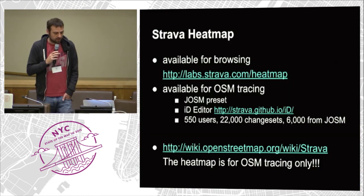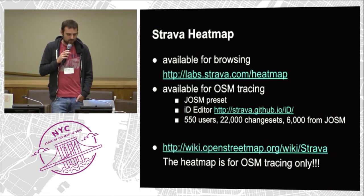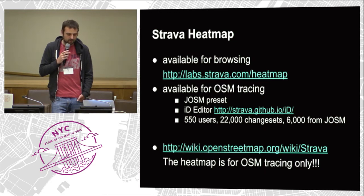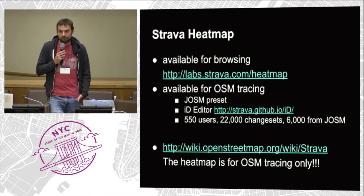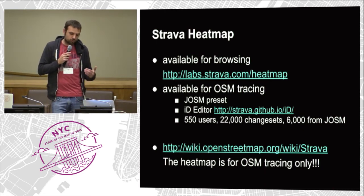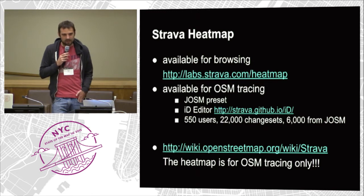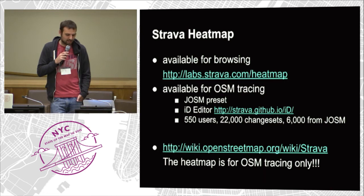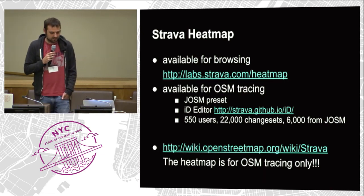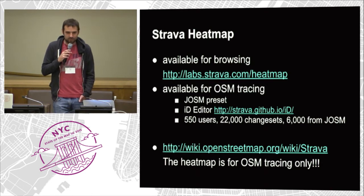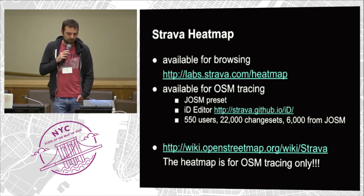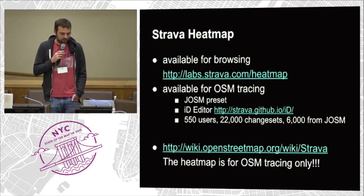The heat map layer is available for ID and JOSM, and about 550 people have used it over the last year across 22,000 changesets. People are using this to add trails, and we're happy to provide that. One important thing: the heat map is for OSM tracing only — it's not open data. Please use it for OSM tracing only, because when someone emails us about cool things they did with the heat map, it raises alarm bells within the company.